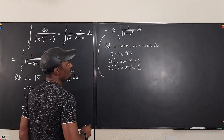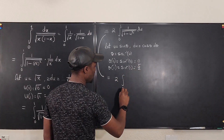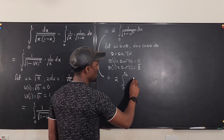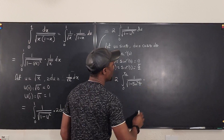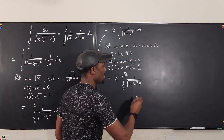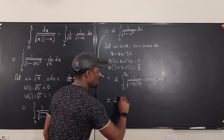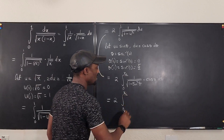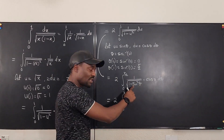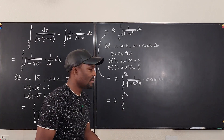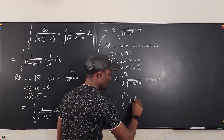So the integral becomes 2 times the integral from 0 to pi over 2 of 1 over the square root of 1 minus sine squared theta, multiplied by cosine theta d-theta. Now, 1 minus sine squared theta equals cosine squared theta, so I have 1 over the square root of cosine squared theta, and the square root of cosine squared theta is cosine theta. That gives me 1 over cosine theta times cosine theta, which cancels to just 1.